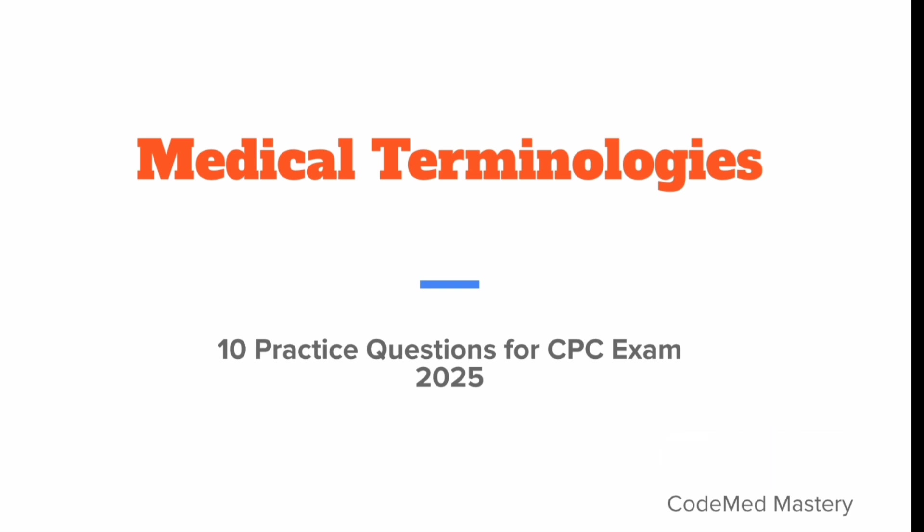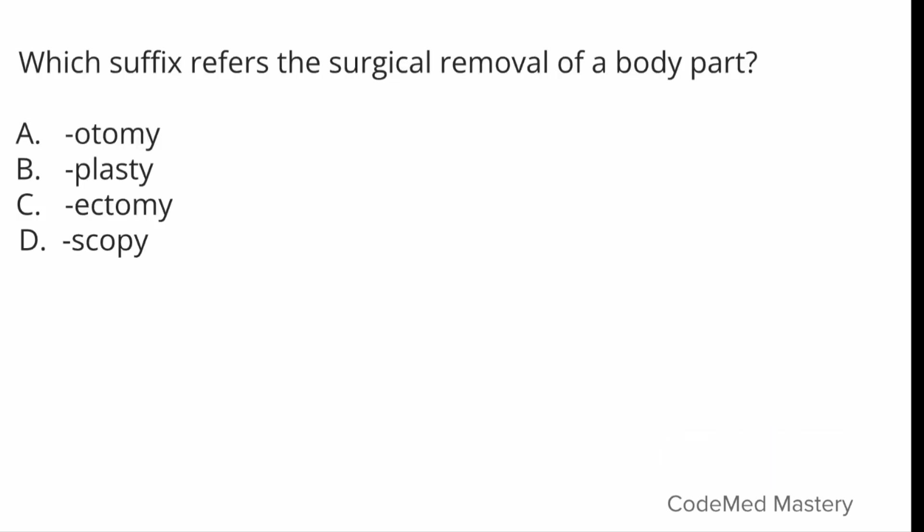Which suffix refers to the surgical removal of a body part? Option A: -otomy, Option B: -plasty, Option C: -ectomy, Option D: -scopy. The right answer is -ectomy, that is Option C. -otomy refers to cutting into or making an incision, -plasty refers to surgical repair or reconstruction, and -scopy refers to visual examination using a scope.